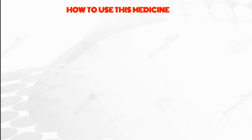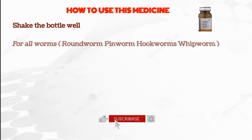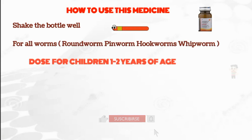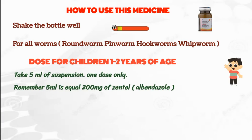Let's see how to use this medicine. Shake the bottle well before using this suspension. For all worms, the dose for children 1 to 2 years of age is 5 ml of suspension — one dose only. Remember, 5 ml equals 200 mg of Zentel.